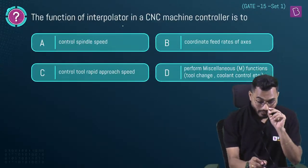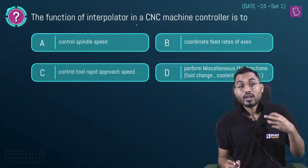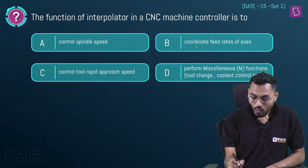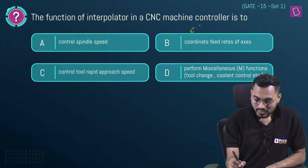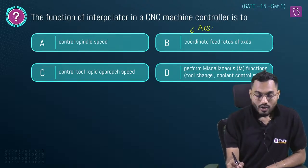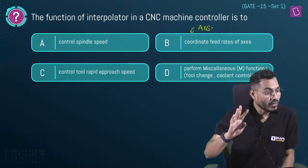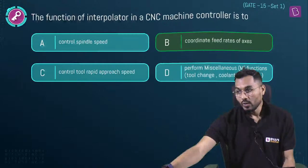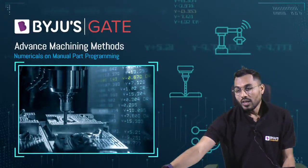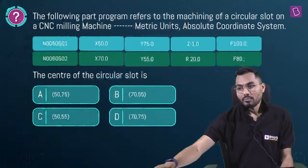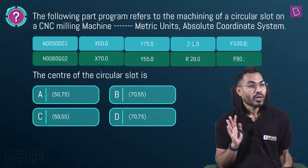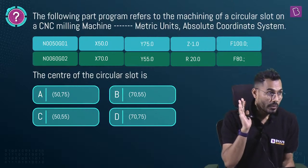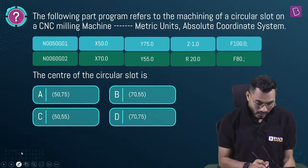The function of the interpolator in a CNC machine controller is to control the coordinate feed rate of axes — the coordinate axis movement. This question was also asked in 2015. Now let's move to manual part programming with G-code and M-code.